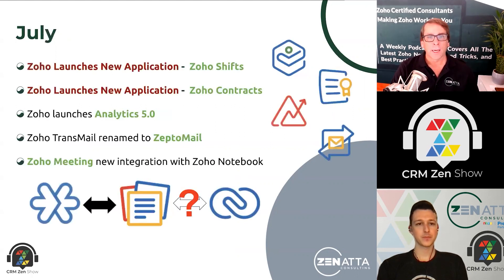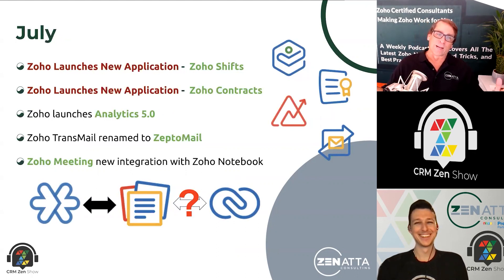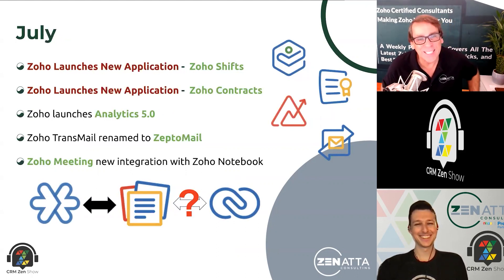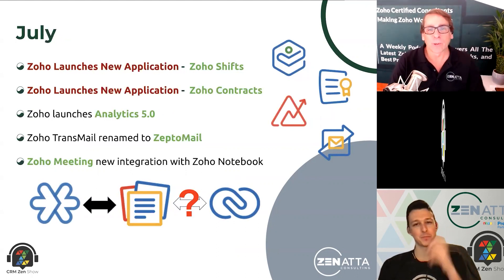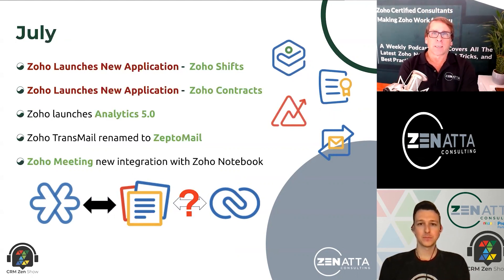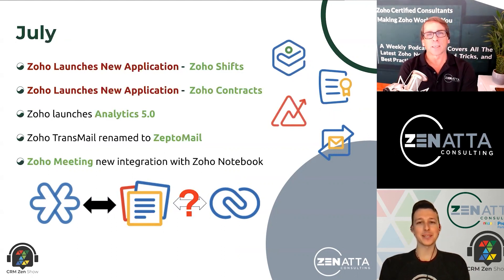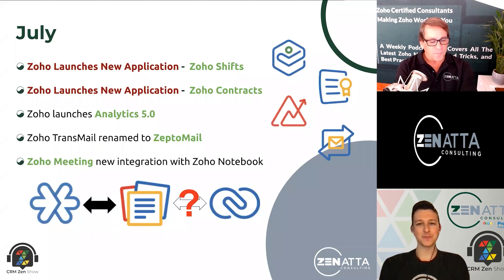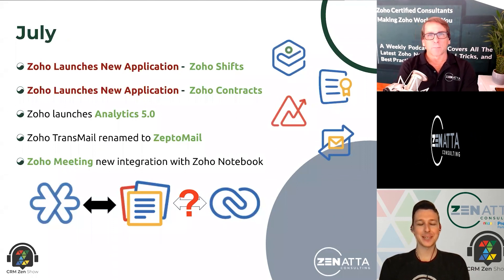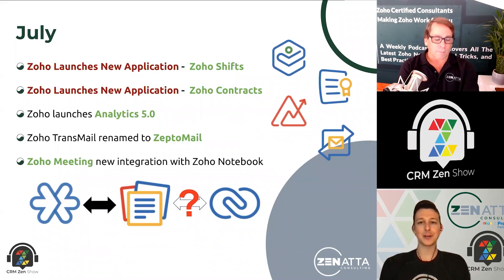Moving into July — they got back on the grind with new applications. Zoho Shifts was launched — an interesting little application that almost looks like a Creator application. It looks similar to Bookings in its UI. It's basically used for shift management — you add your users, create shifts, put them on the shifts, and they can check in and check out.